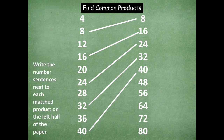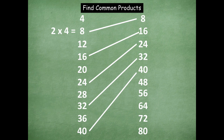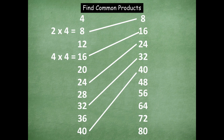Now we're going to write number sentences next to each matched product on the left half of the paper. You're only going to write a number sentence for eight, 16, 24, 32, and 40. For example, two times four equals eight, and four times four equals 16. So it goes: one times four equals four, two times four equals eight, three times four equals 12 — remember, products of four. Pause the video, write all those in including the two already done, then click play when you're ready for the next step.